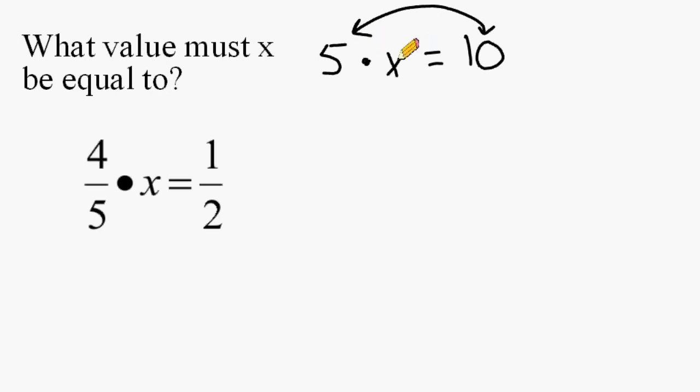So, we could get our answer 2 by saying 10 divided by 5 is equal to 2. And we are going to use the same strategy with this fraction equation right here. So we're going to start with the answer of 1 half, and we are going to divide it by 4 fifths.